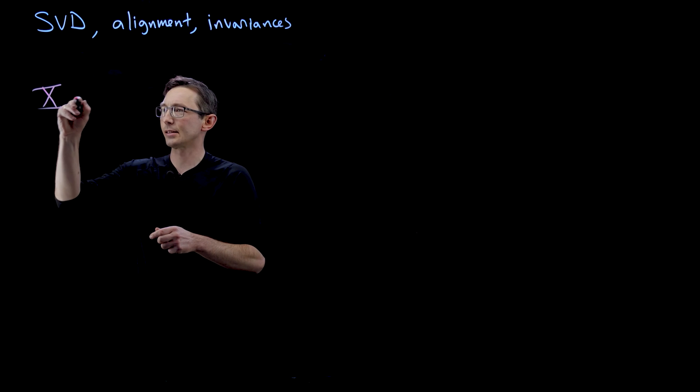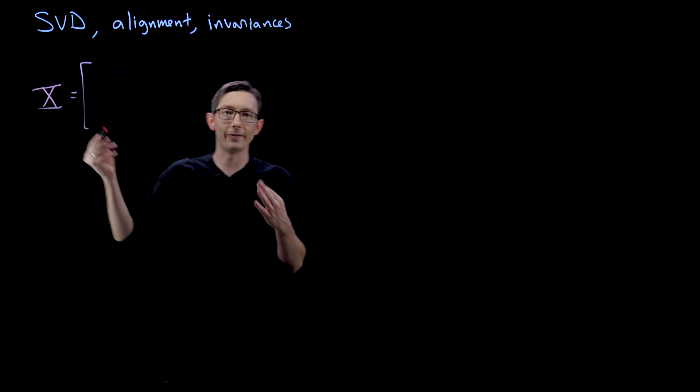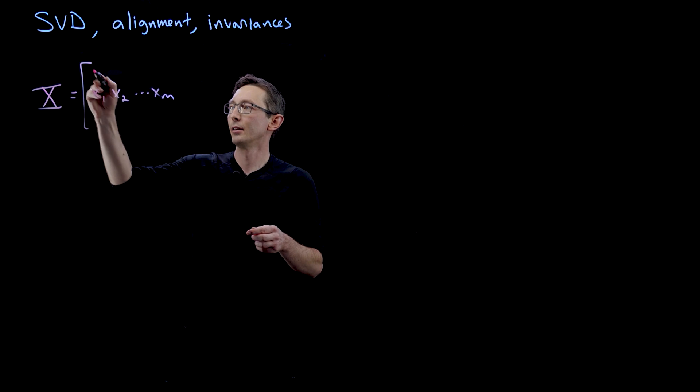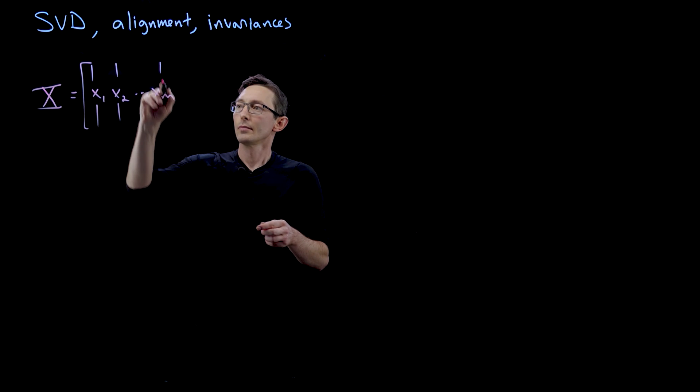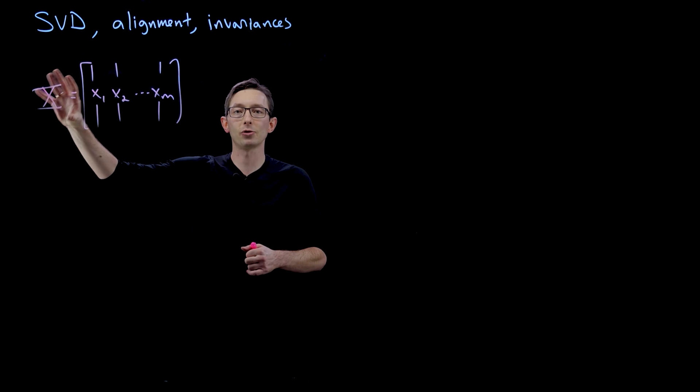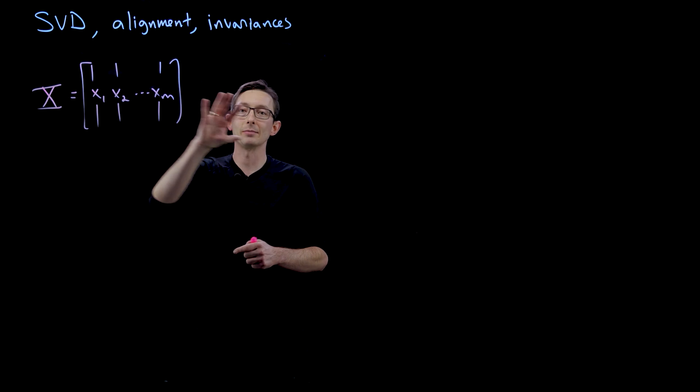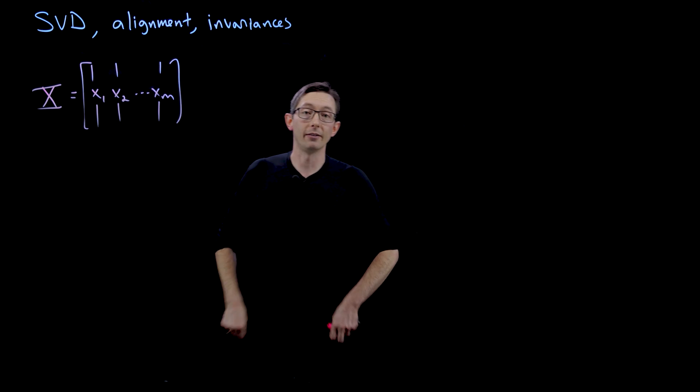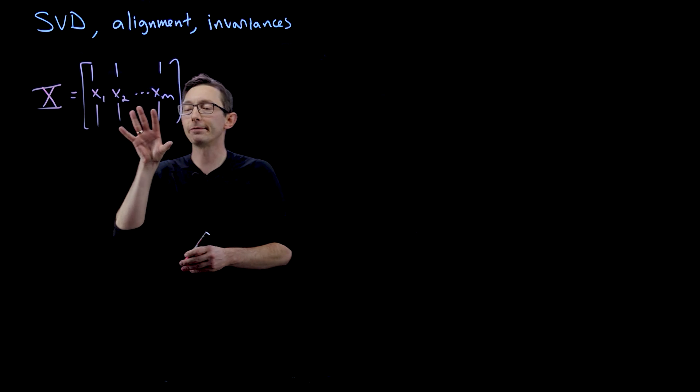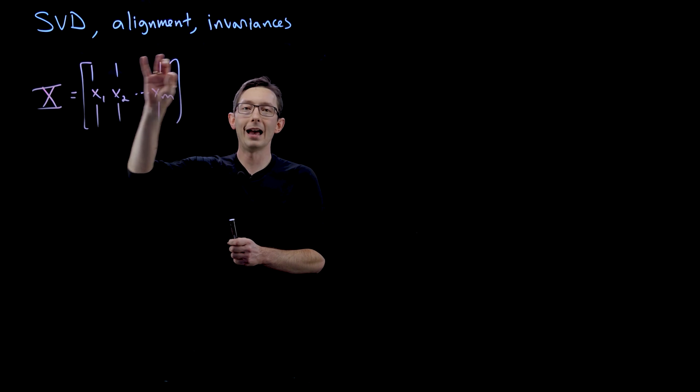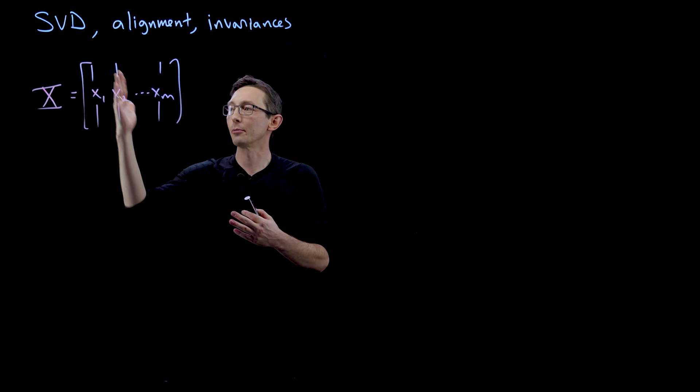again let's say that this is the human faces example x1, x2, dot dot dot, xm, there is an implicit assumption because this is based on that correlation matrix of X transpose times X or X times X transpose where you're taking inner products of all of these columns of X with each other, there's this fundamental assumption that every row of X means the same thing from person to person.